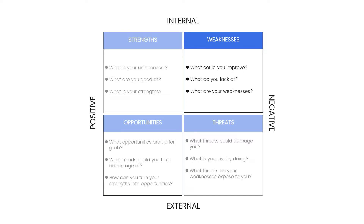Weaknesses: List things that you consider to be weaknesses — that is, things that put you or your business at a disadvantage to others. Weaknesses could include what you could improve on, what you lack, and what your weaknesses are. Make sure you address the weaknesses raised in your SWOT Analysis. The list of weaknesses can indicate how you or your business has grown over time.